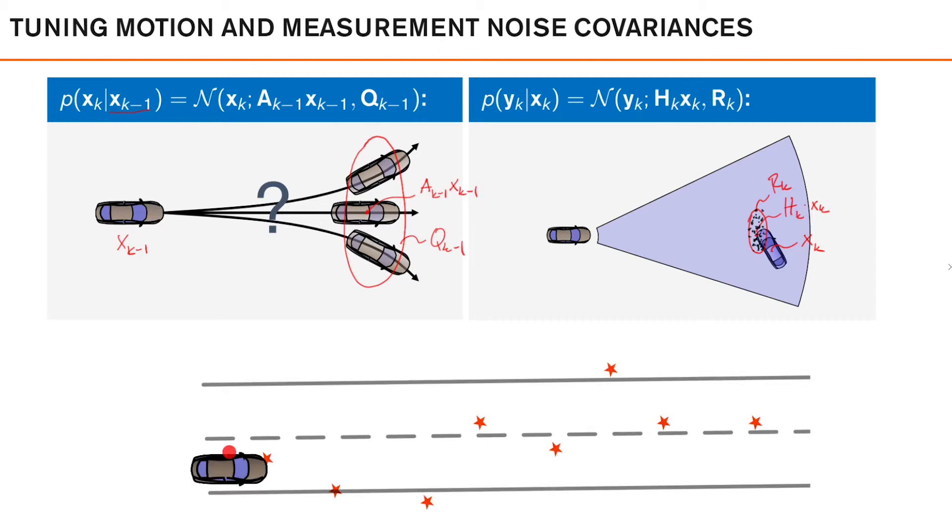In this example, we want to estimate the position of this vehicle using these noisy observations. Note that we have illustrated all the observations here, but the filter will only consider them one at a time.